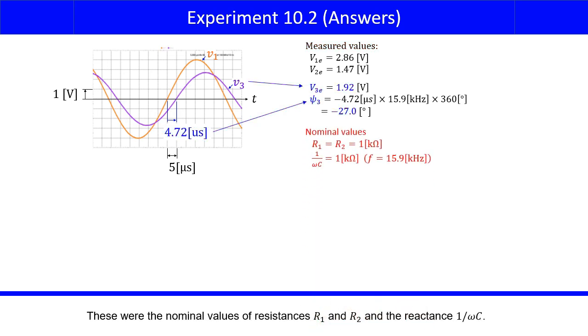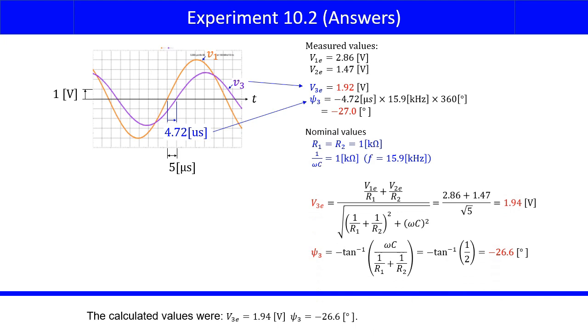These were the nominal values of resistances R1 and R2, and the reactance 1 over omega C. The calculated values were V3E equals 1.94 volts, and psi 3 was negative 26.6 degrees. The measured values of V3E and psi 3 matched the calculated values well.